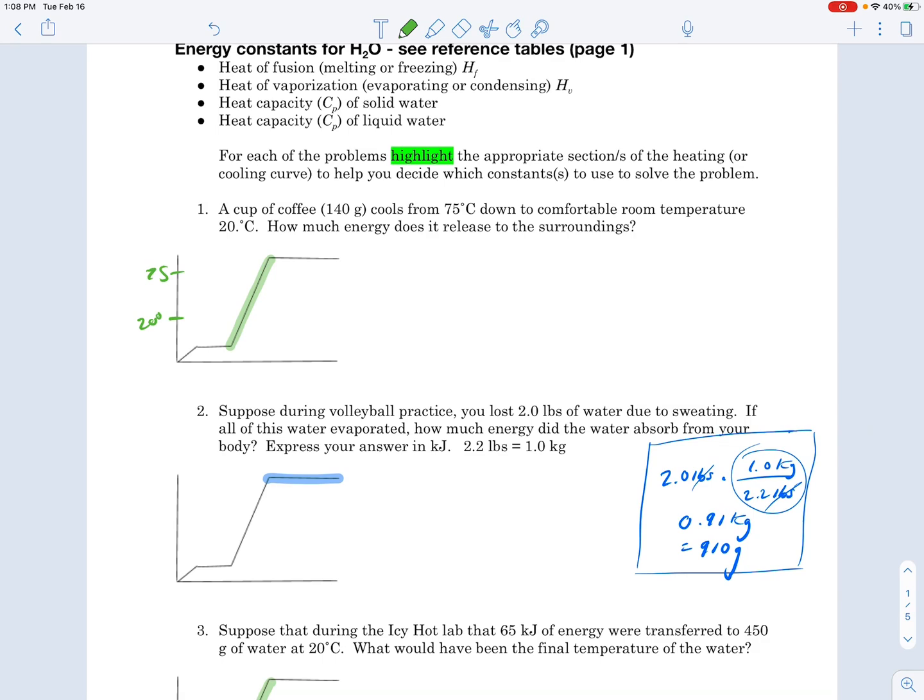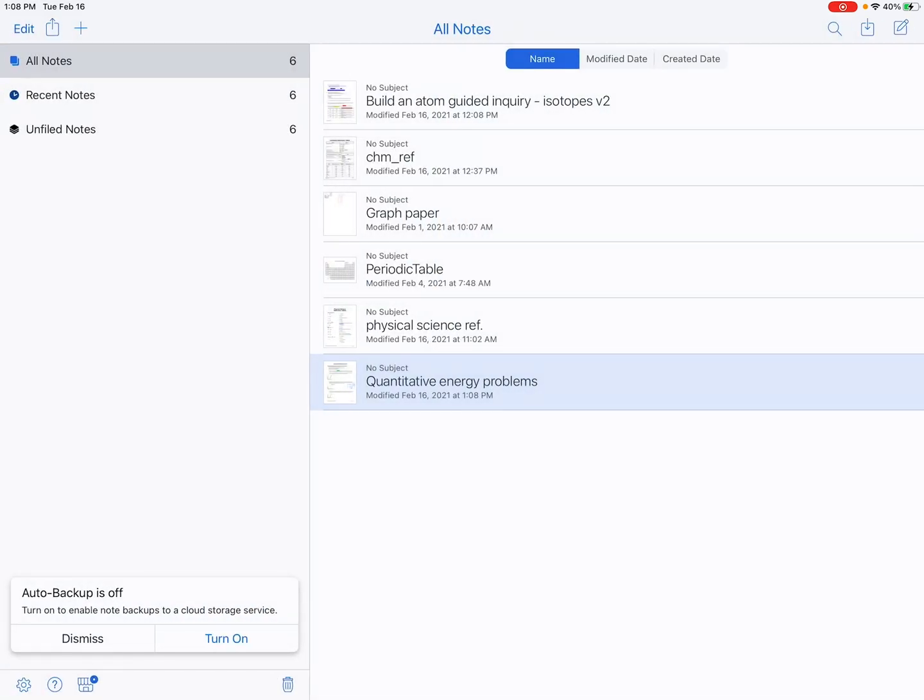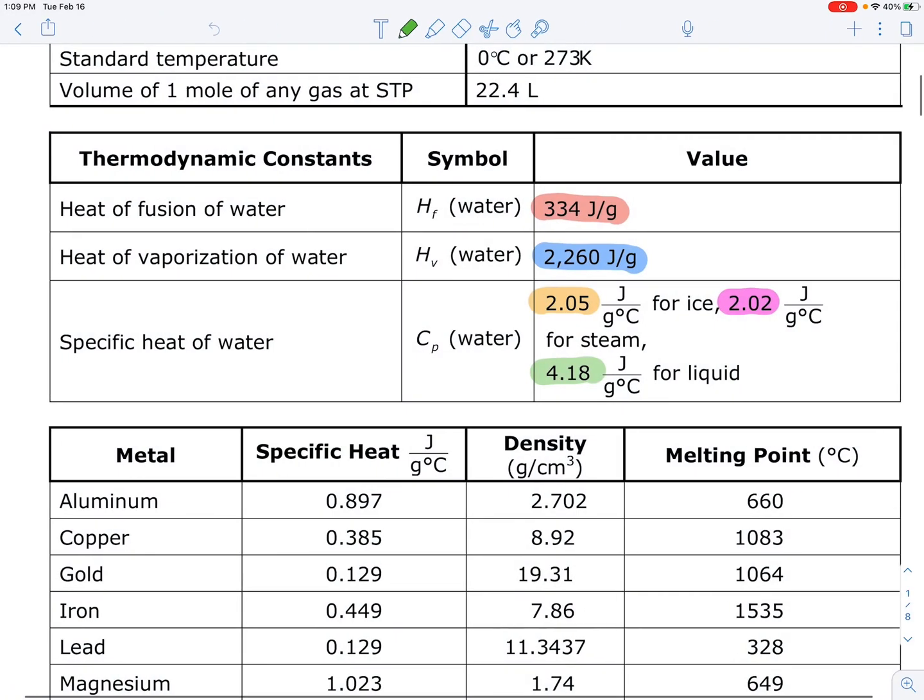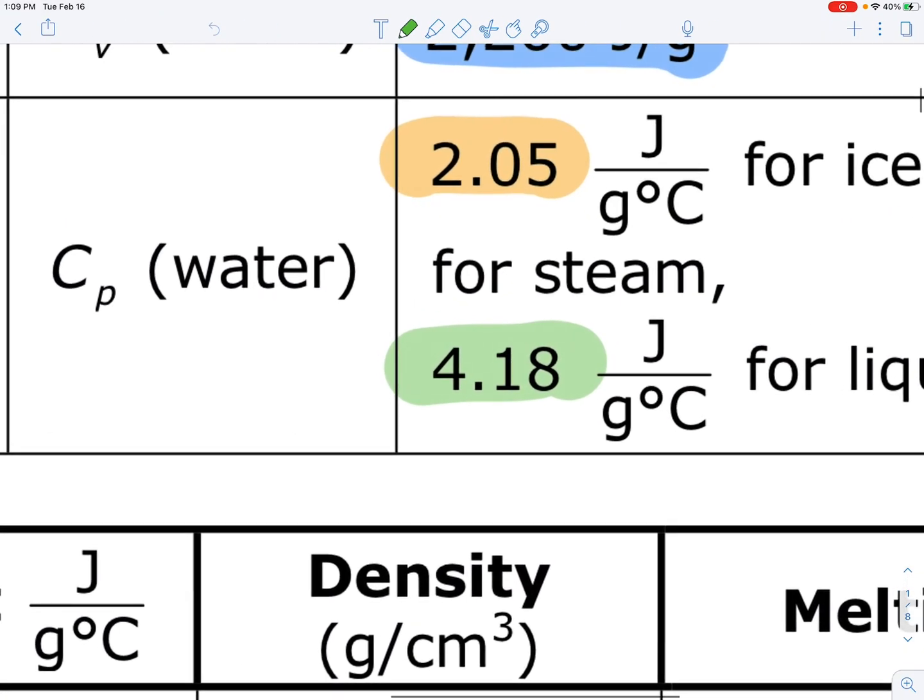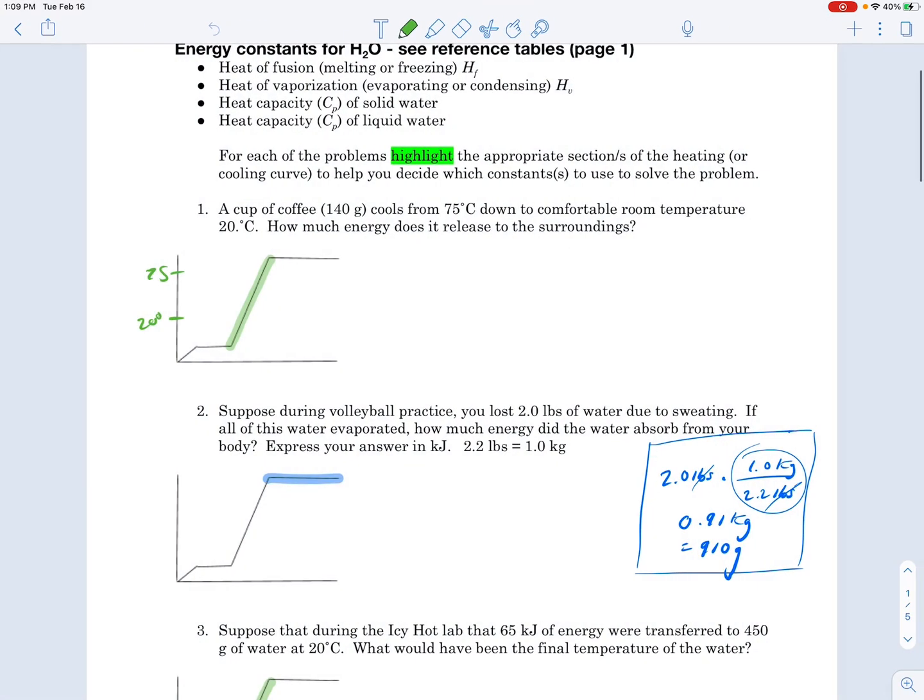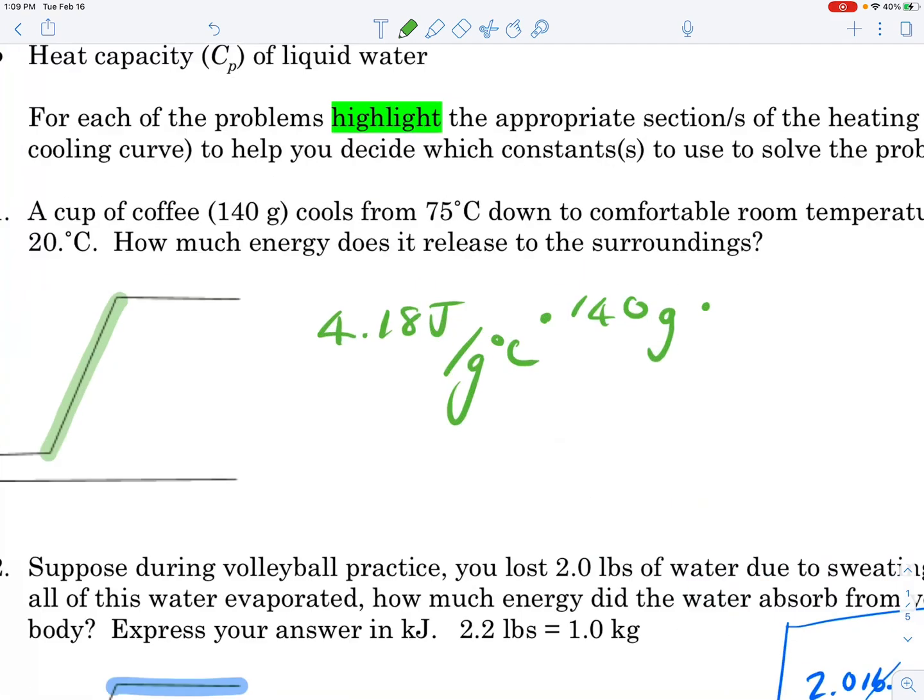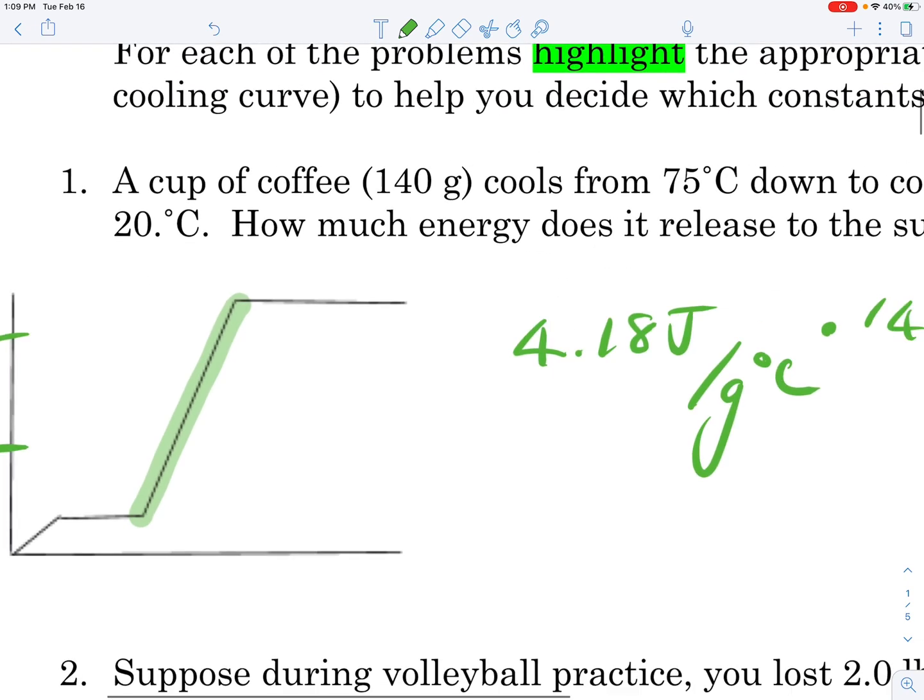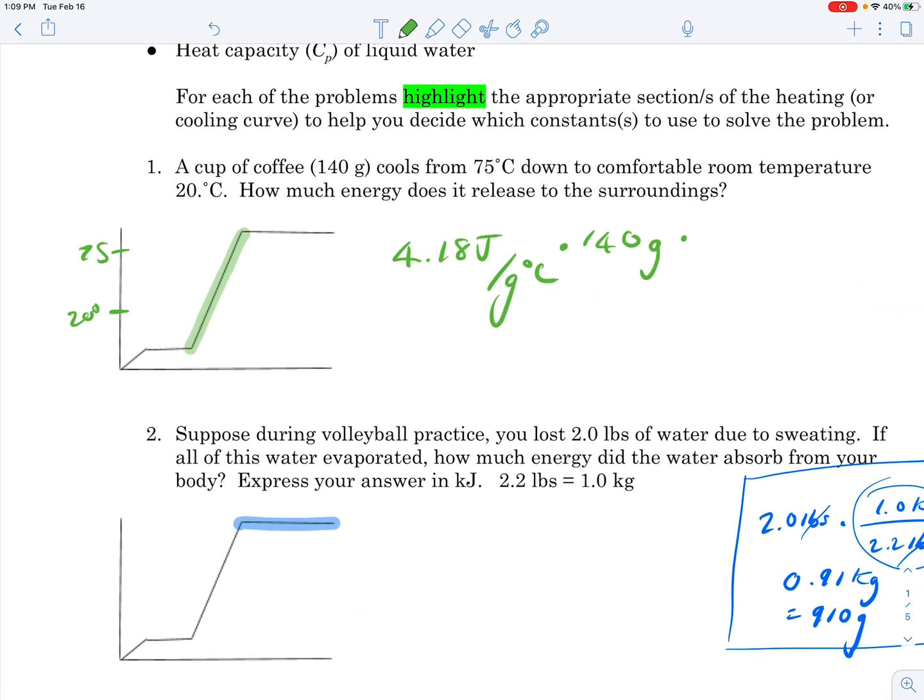The number that goes with that is called the specific heat of water as a liquid, and there it is: 4.18 joules over grams degrees Celsius. We're simply going to write it down and multiply that by the grams, 140, and the change in temperature. The temperature goes from 75 to 20, which is a change of 55 degrees Celsius.